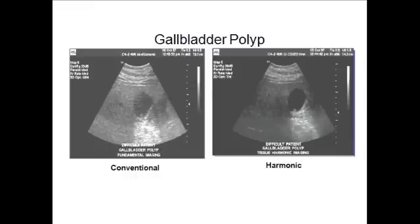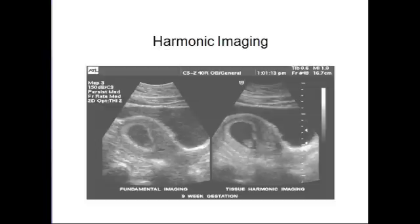Harmonic generation is weaker than the fundamental beam. Harmonics are used to clean up images when there is excessive fogginess and noise. They are also used to suppress side lobes so clutter is reduced, improve the contrast resolution since the noise levels are reduced, and to eliminate reverberations from the body wall.